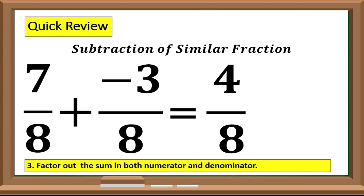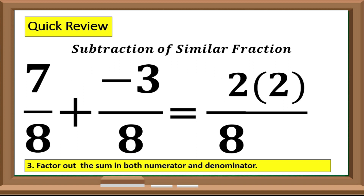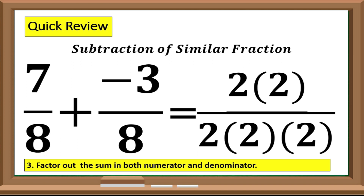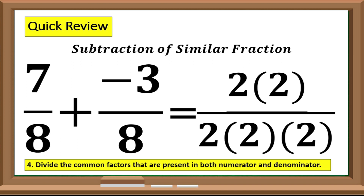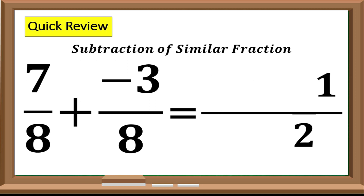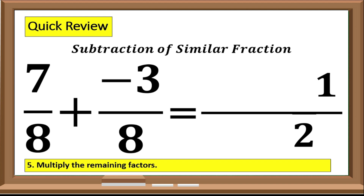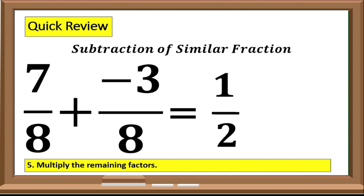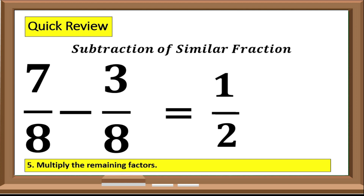Step 3: Factor out the sum in both numerator and denominator. In this case, our numerator is 4, so the factors are 2 times 2. And the factors of our denominator, which is 8, are 2 times 2 times 2. Step 4: Divide the common factors that are present in both numerator and denominator. In this example, we have 2 and another 2. Step 5: Multiply the remaining factors. For the numerator, we have 1, and for the denominator, we have 2. So if you will subtract 7 over 8 minus 3 over 8, that would be equal to 1 half, or 1 over 2.